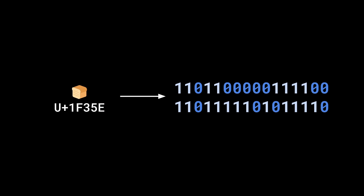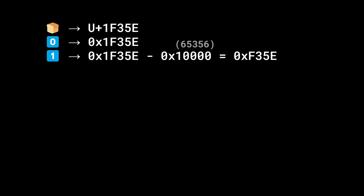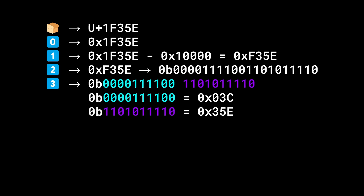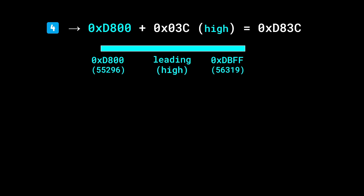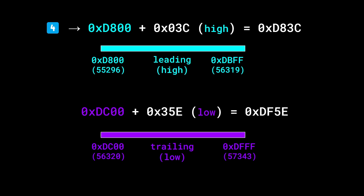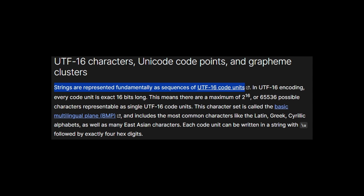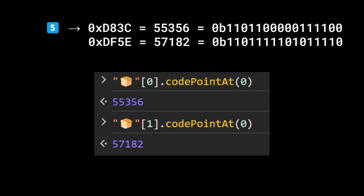Let me teach you how to convert a code point into its corresponding UTF-16 encoding. If we take the bread emoji with the code point U+1F35E, or 0x1F35E, we first subtract 0x10000 from it, which gives 0xF35E. We convert the result to a 20-bit number, then split it in half. Each half is used as an index to select a surrogate — the first half selects a high surrogate, the second a low surrogate. We store the pair into two 16-bit numbers, and that's it. UTF-16 is used by JavaScript strings, so in JavaScript the bread emoji has a length of 2.